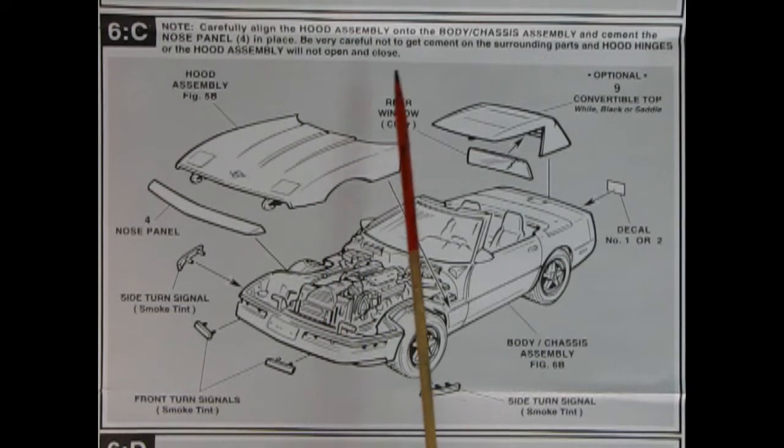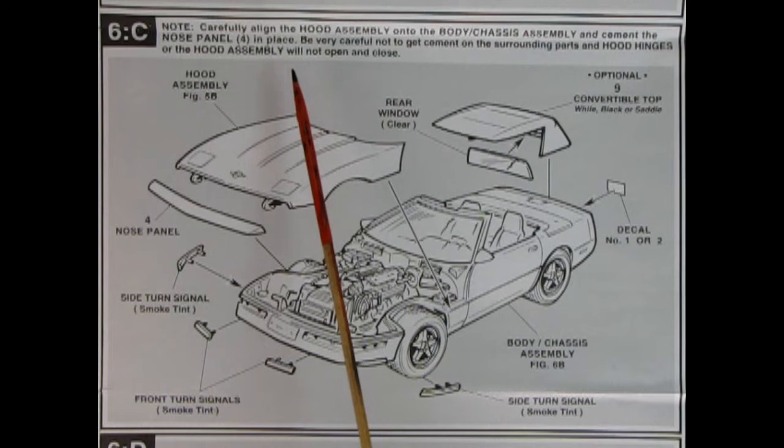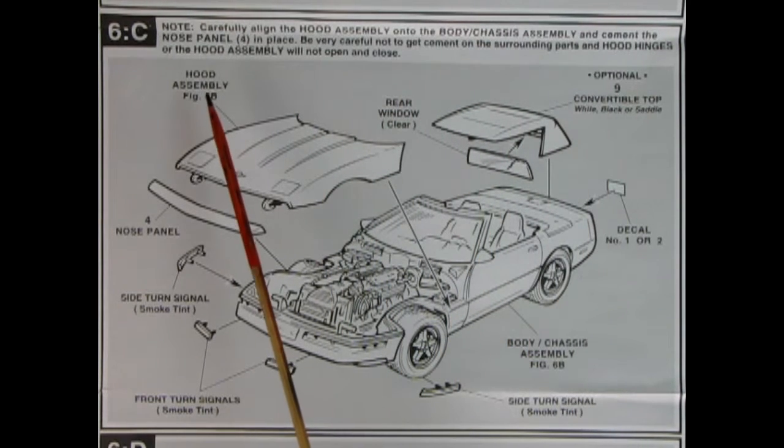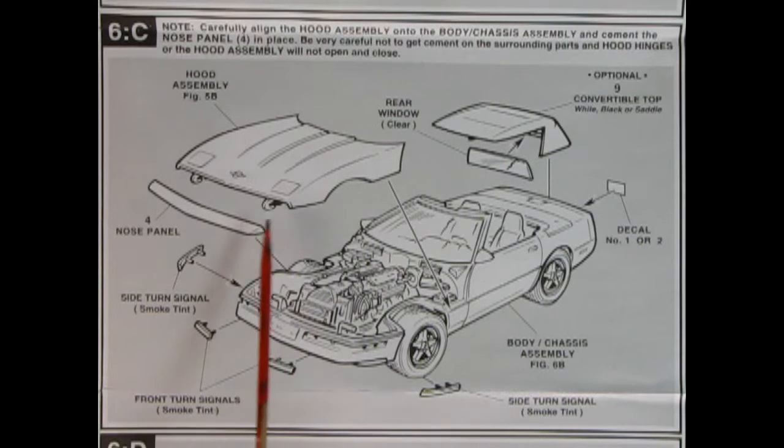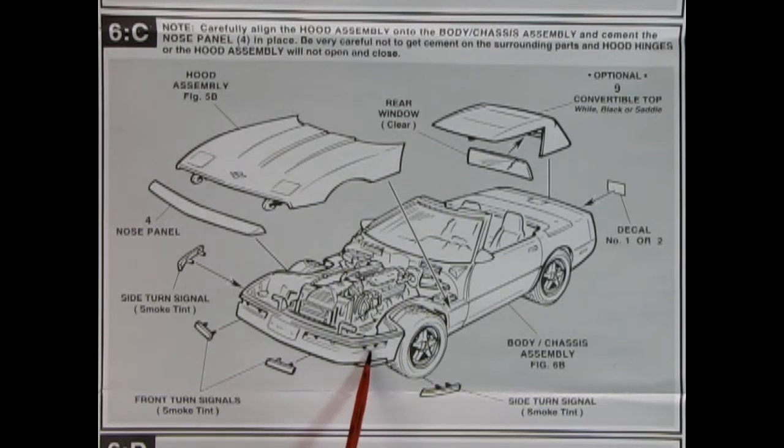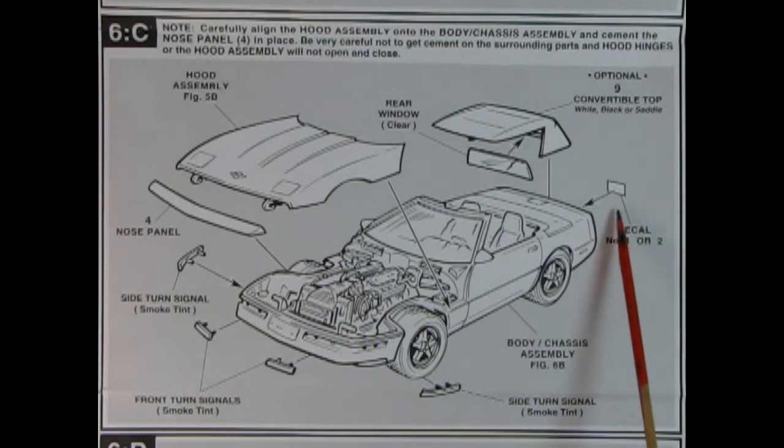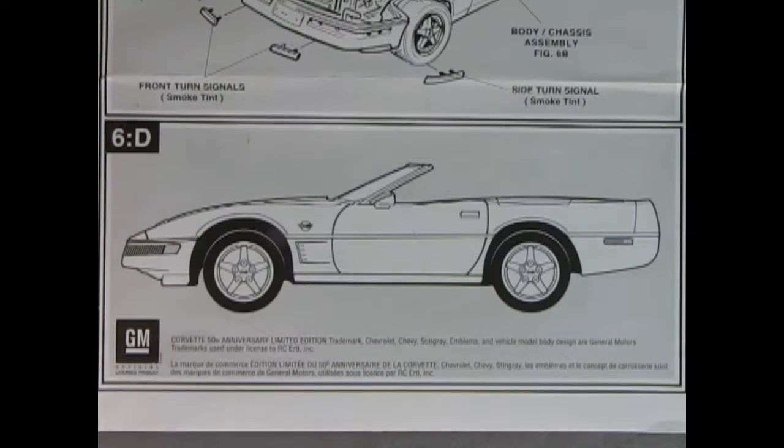Now in panel 6B, it says carefully align the hood assembly onto the body chassis assembly and cement the nose panel in place. Be very careful not to get cement on the surrounding parts and hood hinges or the hood assembly will not open and close. Now I've found this to be a difficult hood assembly, especially on the '86 Corvette. It didn't quite want to line up on one of the sides. So if you've had that problem, let us know in the comments down below. Okay, so we got our hood assembly, which hooks on the little hooks there. Then our nose panel glues over top. So you don't see those little bars and the hook. Then you got your turn signals and front turn signals, side and front. They go in there and these actually loop around. And then we've got a decal which goes on the back. That's our license plate. And then the optional up top with the glass. And here we have a nice side view of our Corvette. Now this is supposed to show us where the decals go, but I don't think this kit really has many decals. However, you could photocopy this and then give it to a kid to color with some crayons.